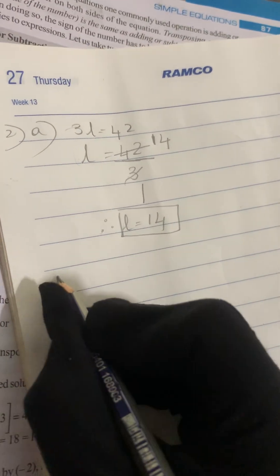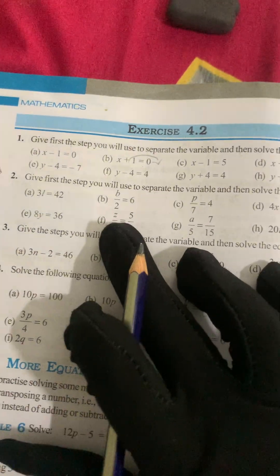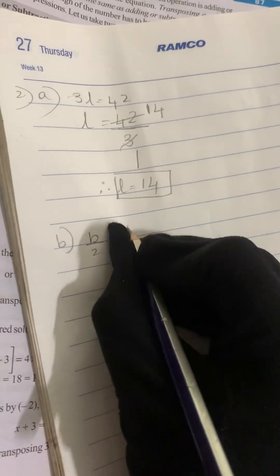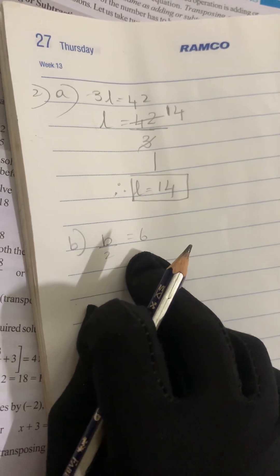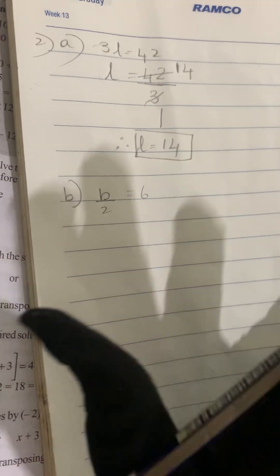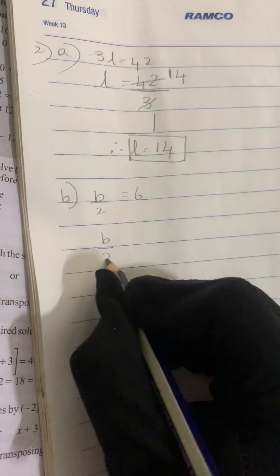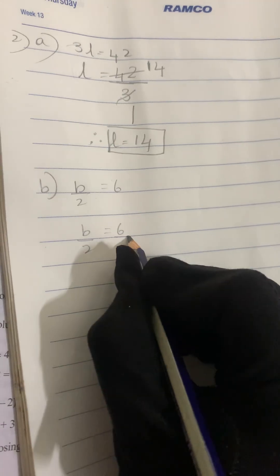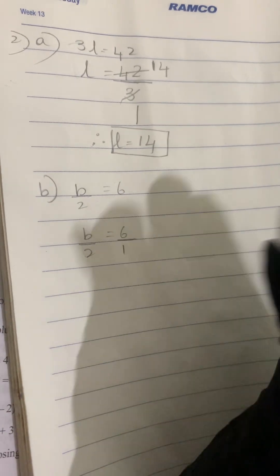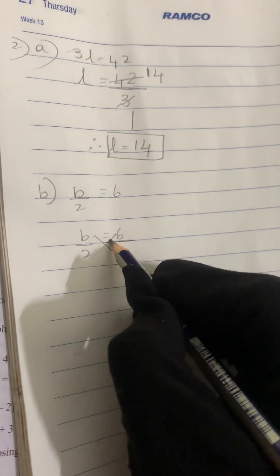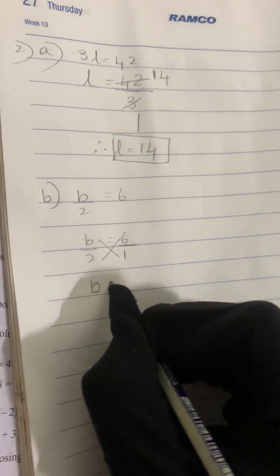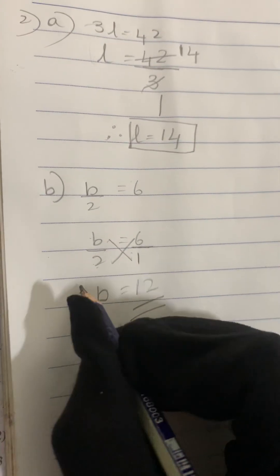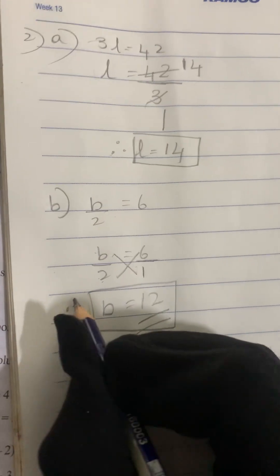Now let's solve the B sum. The question is B divided by 2 equals 6. Here we have a denominator on the left. Since there is nothing in the denominator on the right, we assume it as 1 and do cross multiplication. B into 1 is B, and 2 into 6 is 12. So B equals 12 is our final answer.